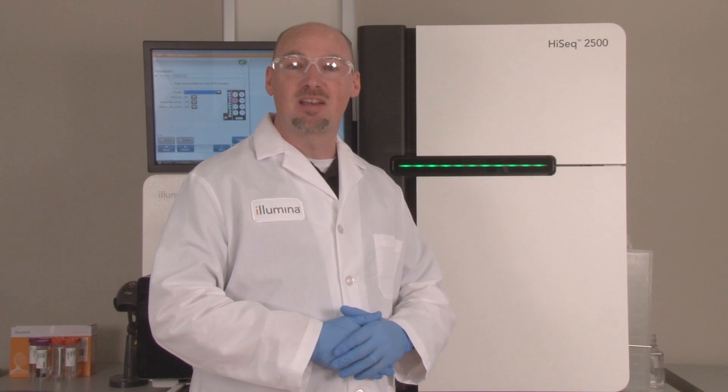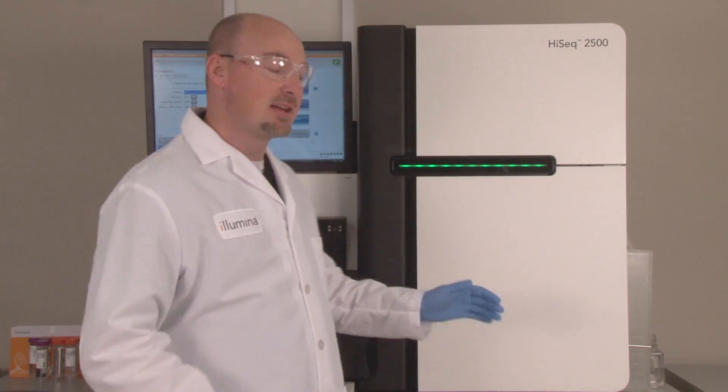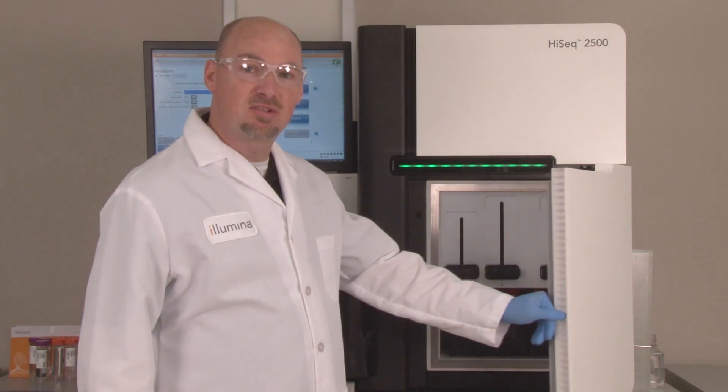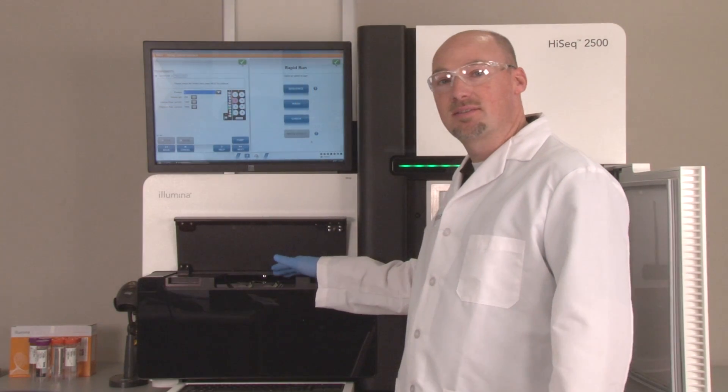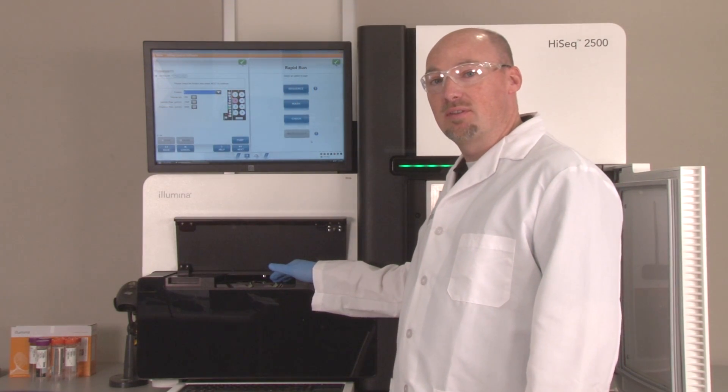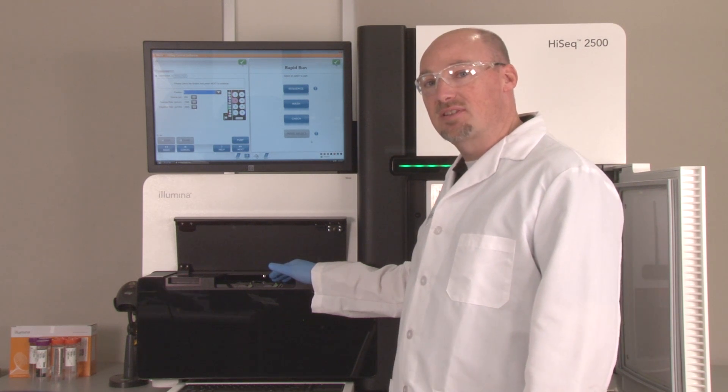The temperature for the SBS chemistry on the HiSeq is controlled in two locations: the chiller, which keeps the reagents cold, and the peltiers found beneath the flow cells, which heat and cool the flow cells as needed during the SBS chemistry. Let's first take a look at the chiller.